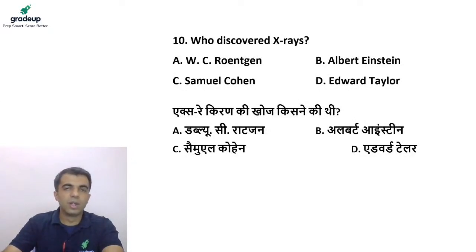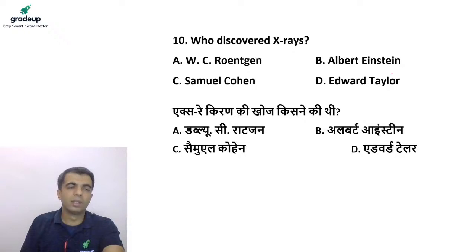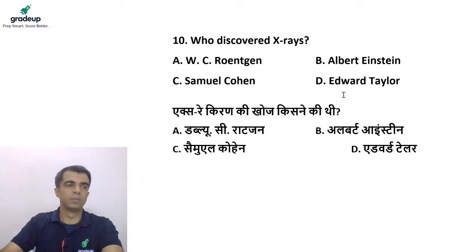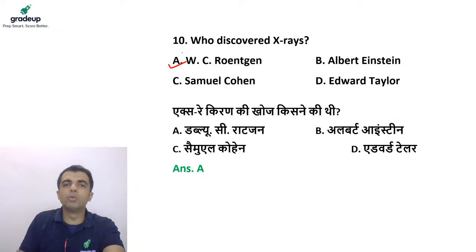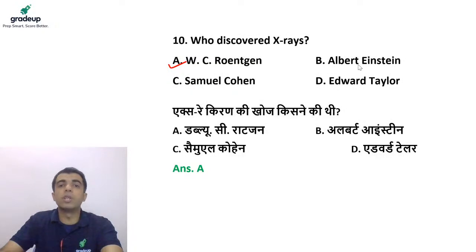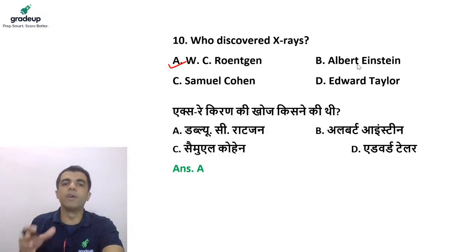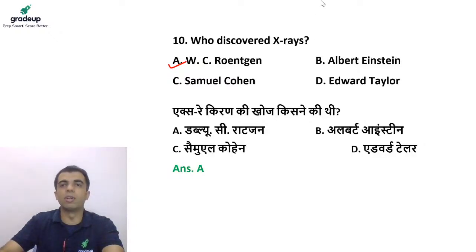Next question: who discovered X-rays? Options are W.C. Röntgen, Albert Einstein, Samuel Cohen, and Edward Taylor. The answer is option A — W.C. Röntgen. He was the pioneer to produce and detect electromagnetic radiation, discovered in 1895. He was also awarded the Nobel Prize in Physics for this discovery.